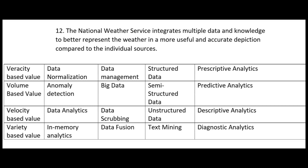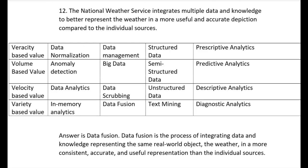Number twelve: the National Weather Service integrates multiple data and knowledge to better represent the weather in a more useful and accurate depiction compared to the individual sources — that's data fusion. Data fusion is the process of integrating data and knowledge representing the same real-world object, in this case the weather, in a more consistent, accurate, and useful representation than the individual sources of data.